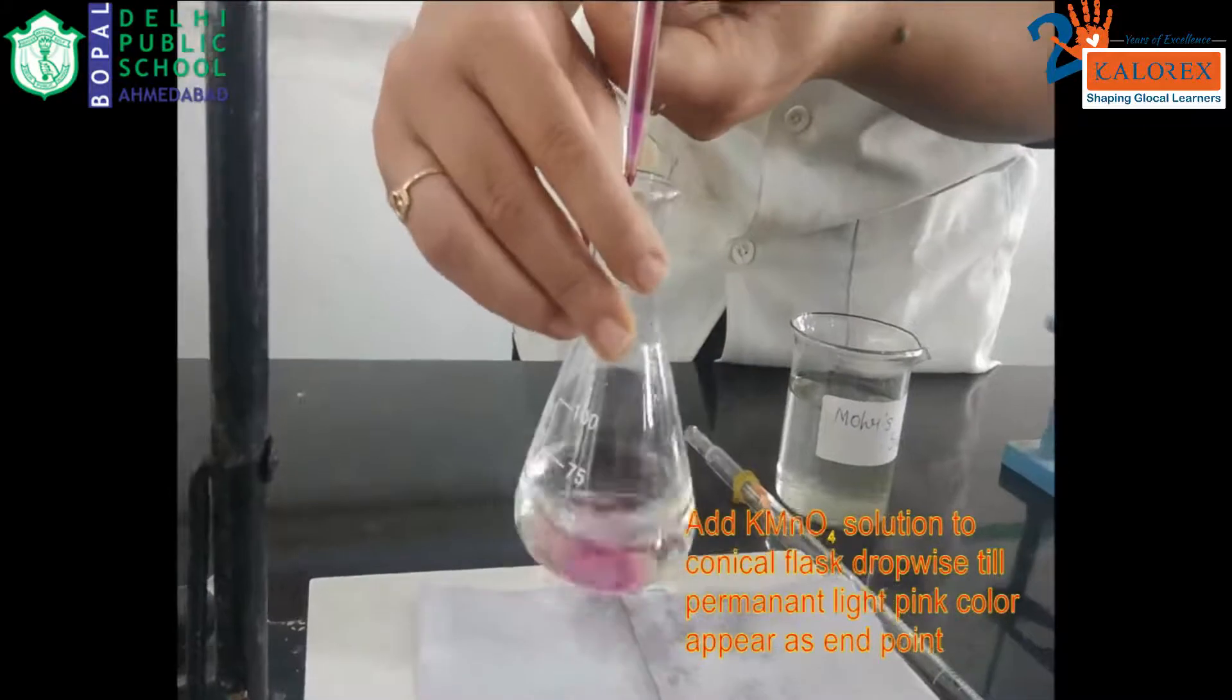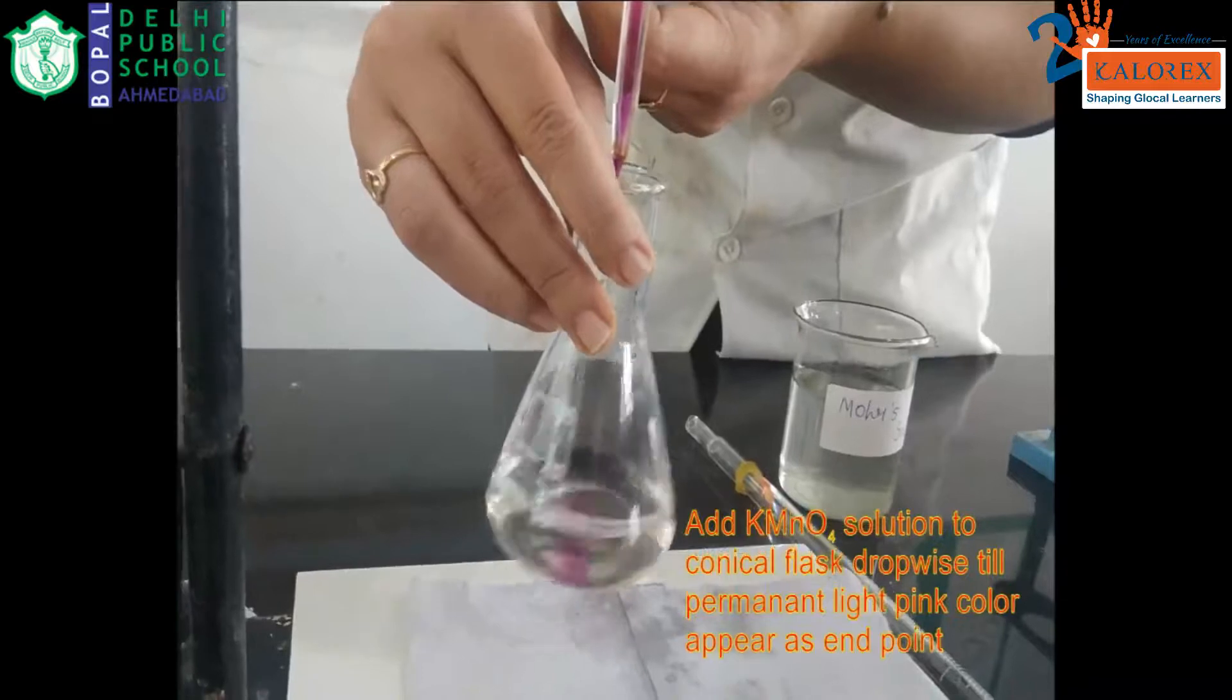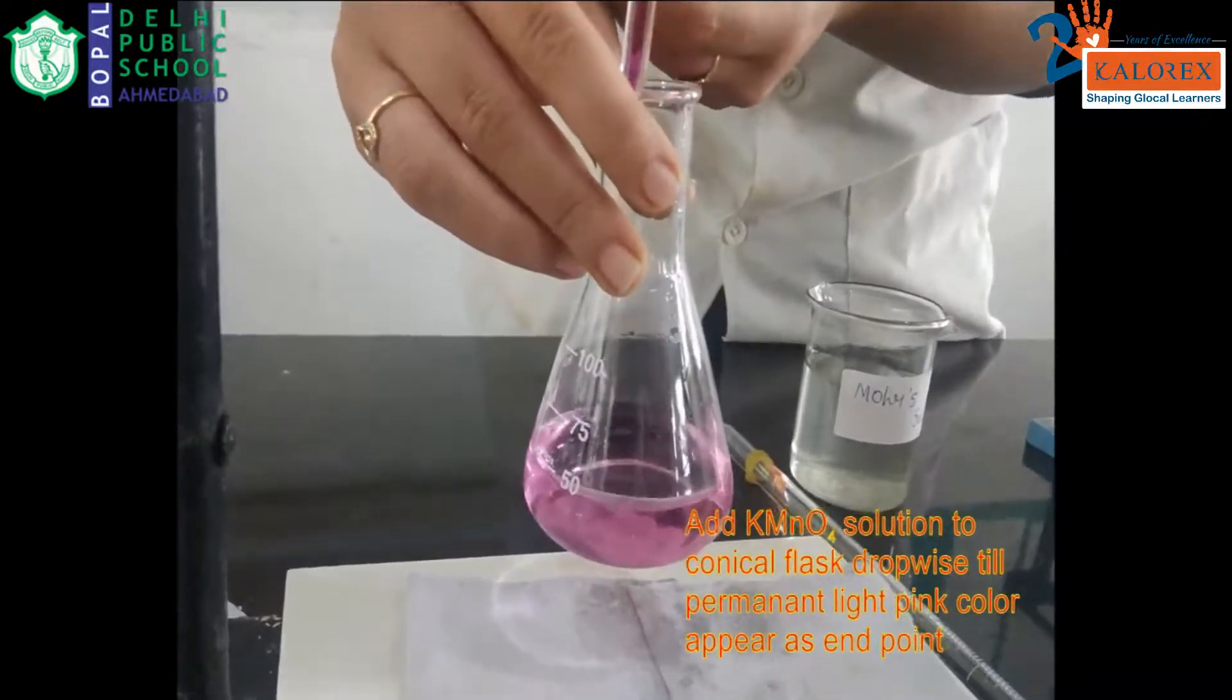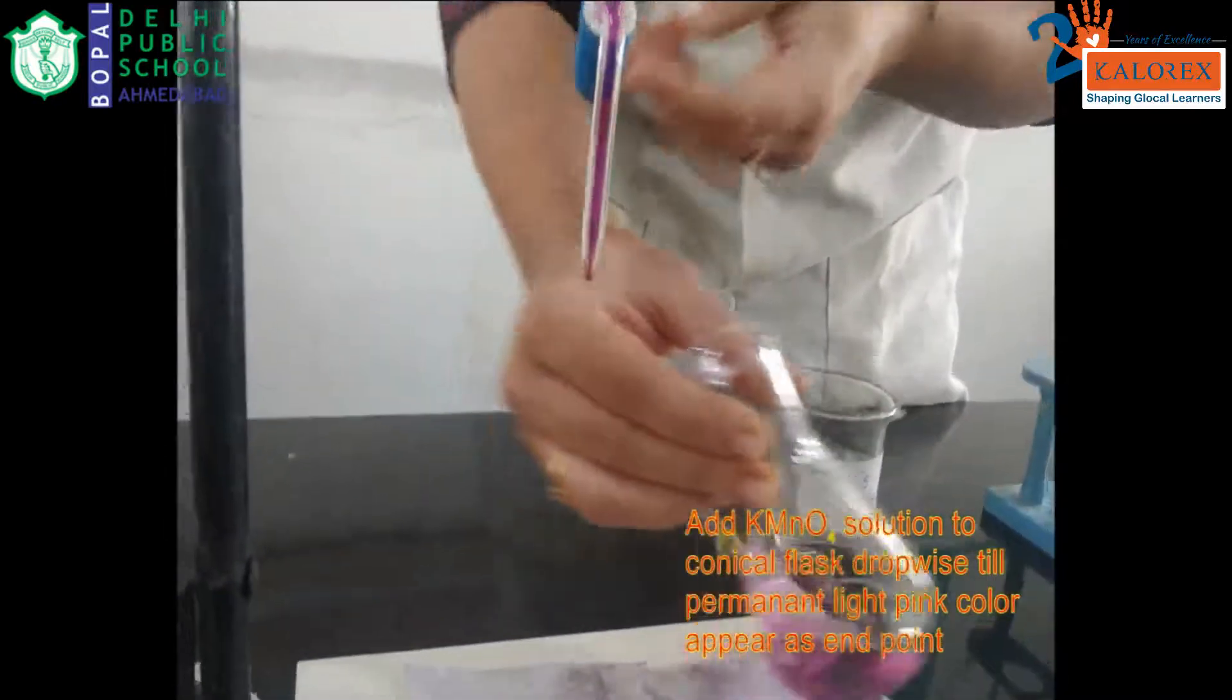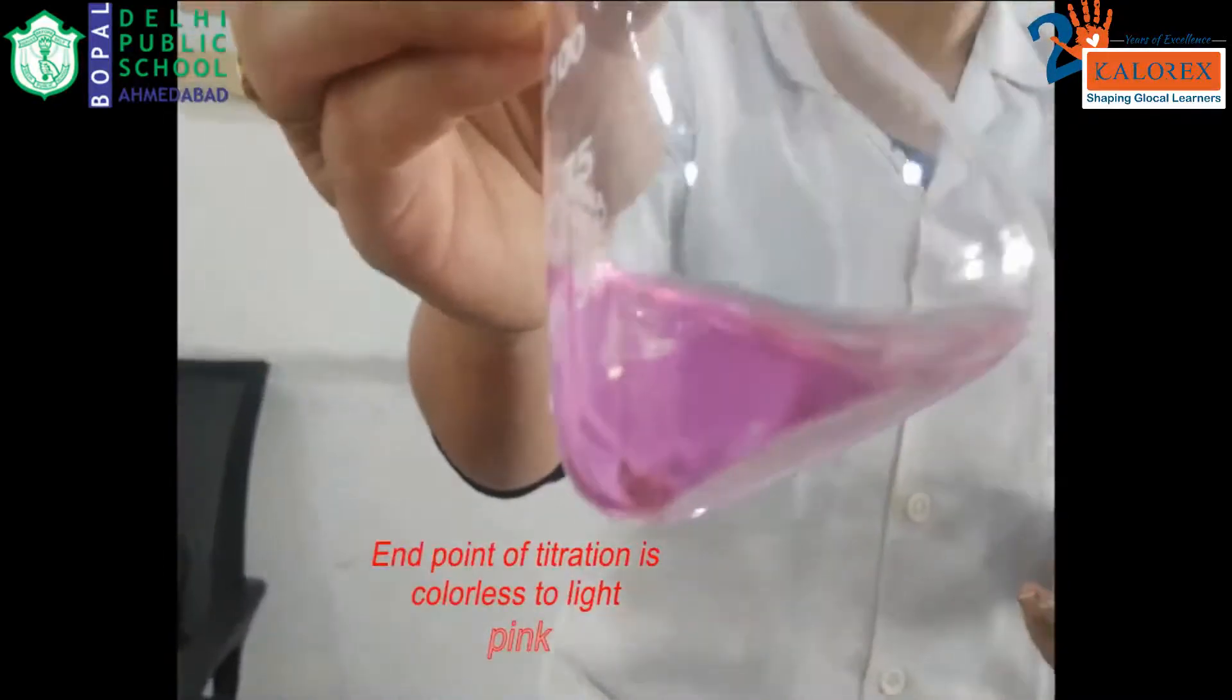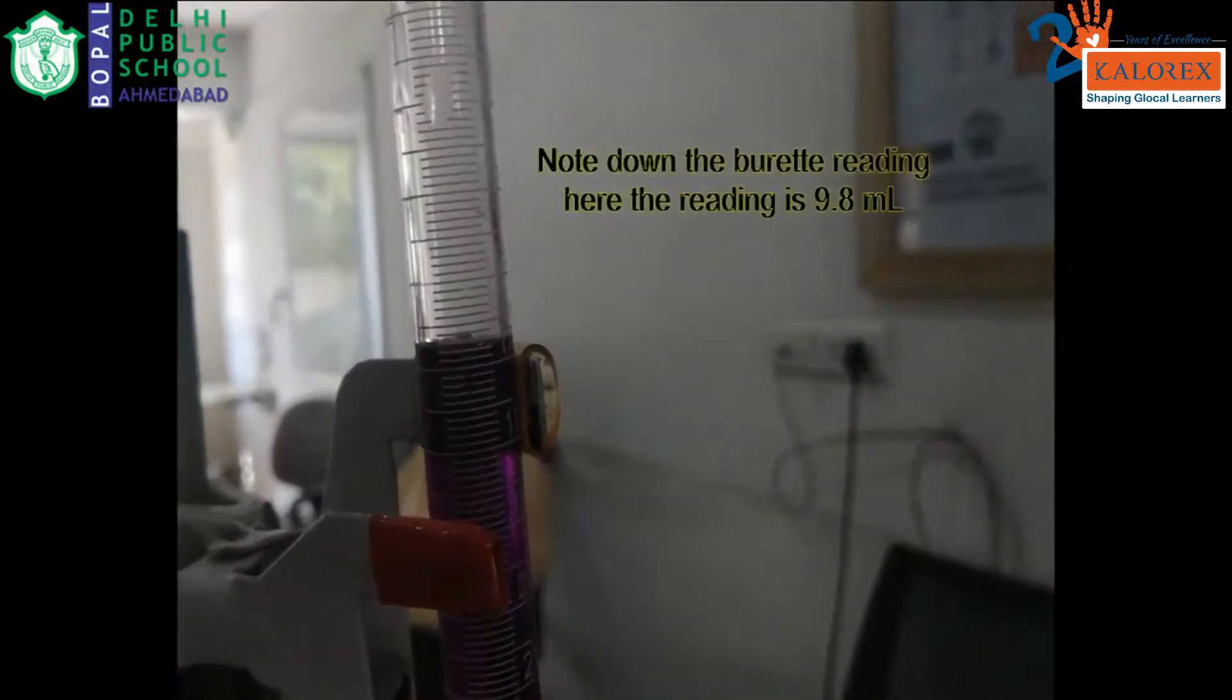While adding KMnO4, if you find the pink color comes into the entire bulk, that means the titration endpoint is very near. Just add one extra drop to ensure the permanent pink color of the solution.